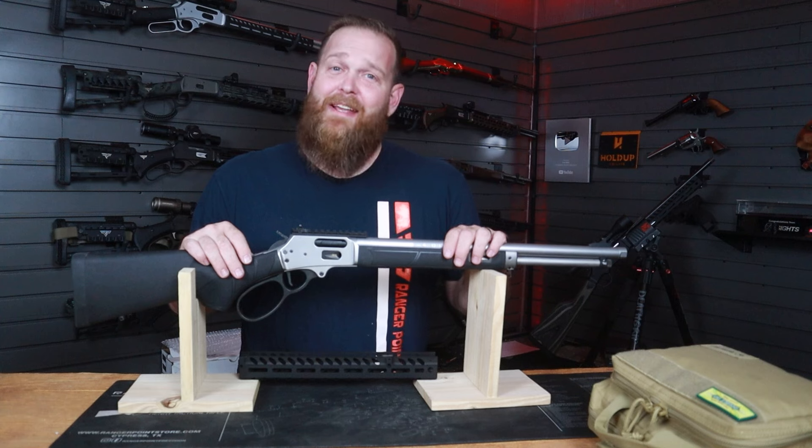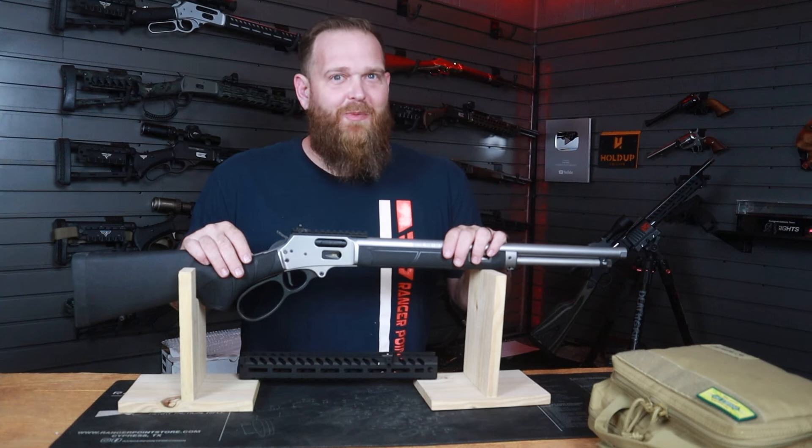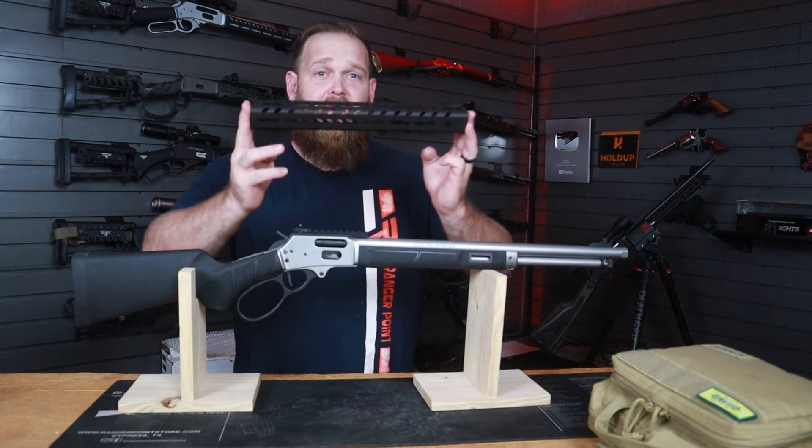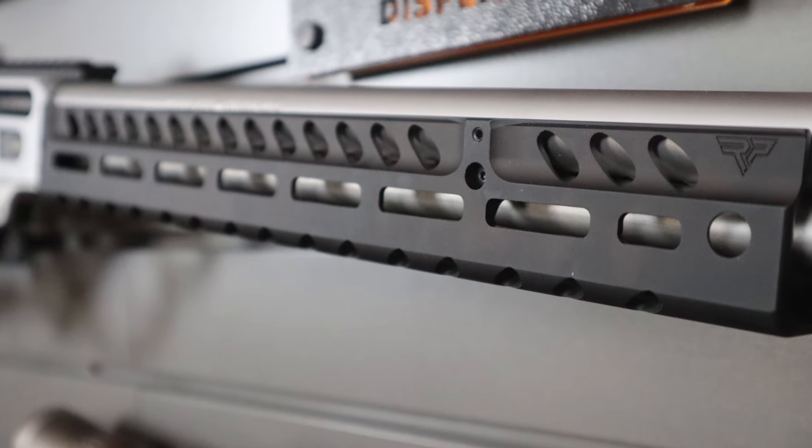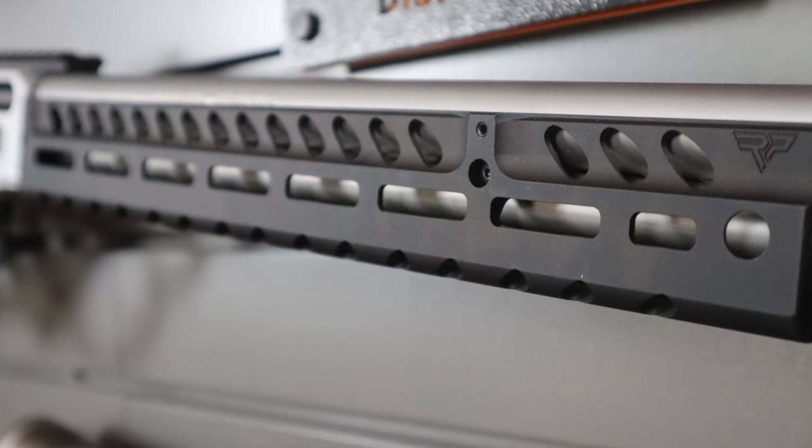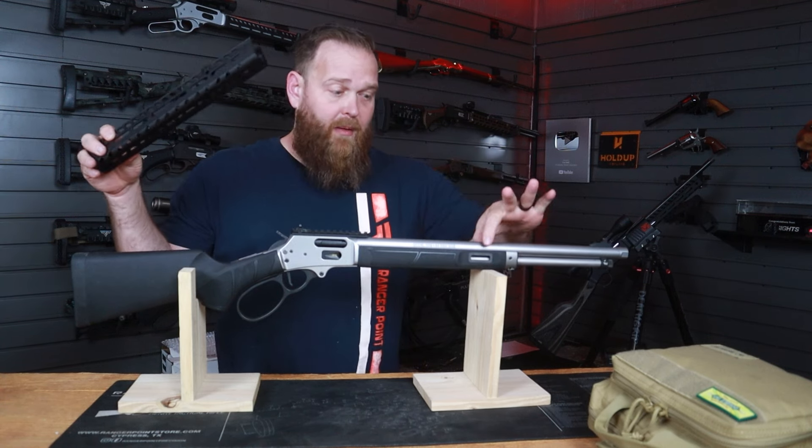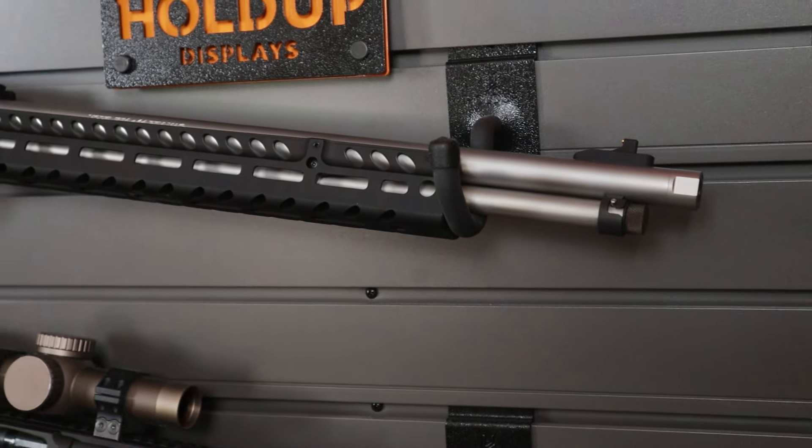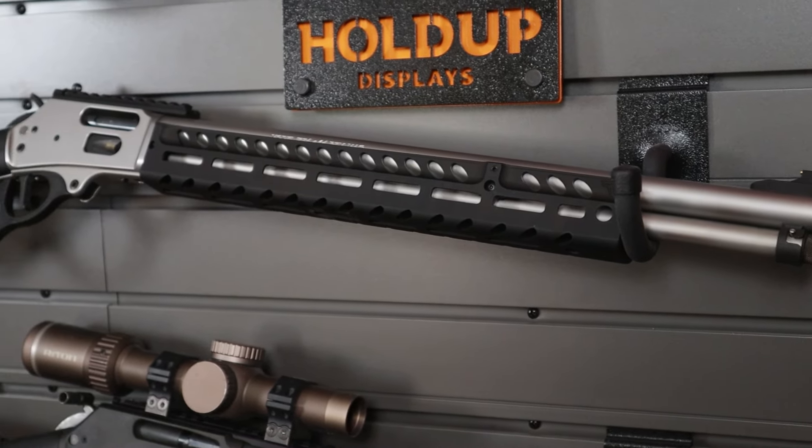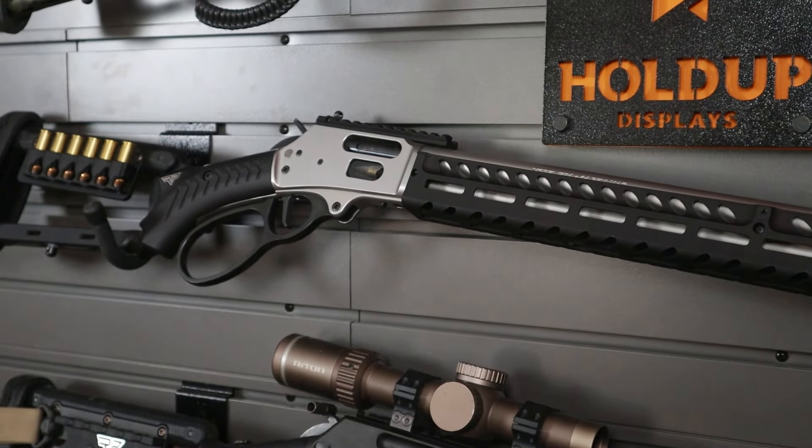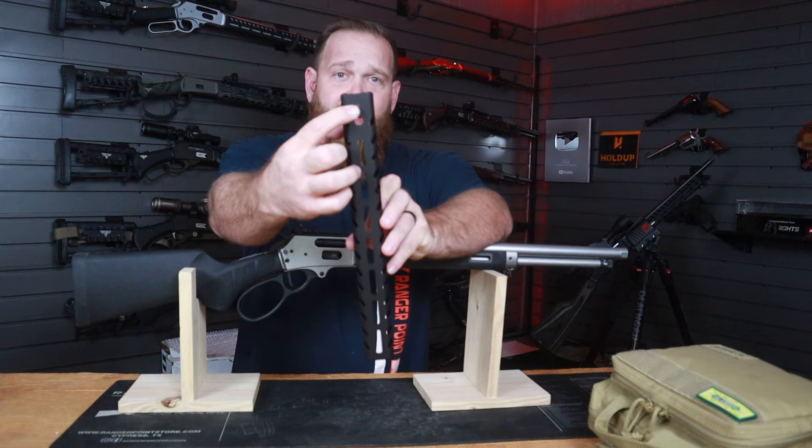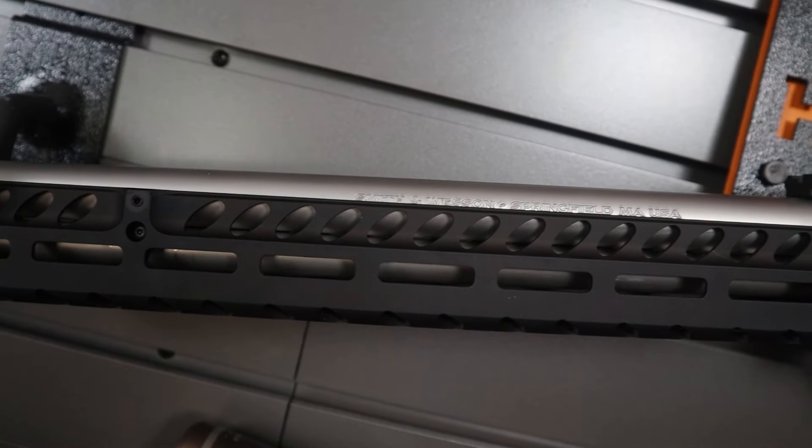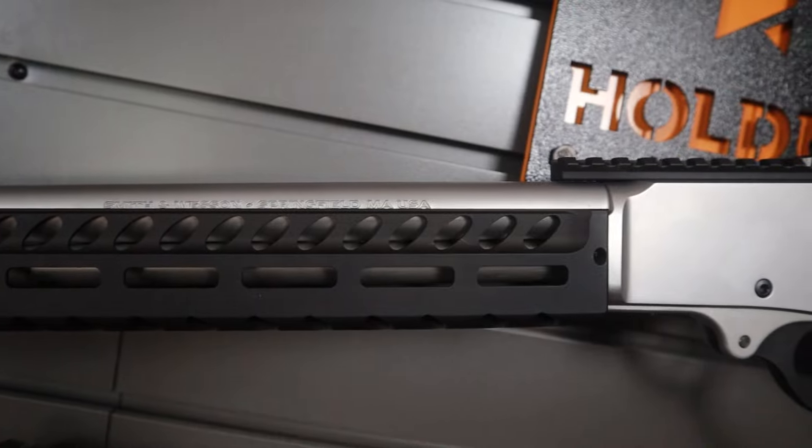Hello Ranger Point Precision friends and family, and a special howdy to all you space cowboys. Today we're installing our M-LOK handguard on the Smith & Wesson 1854. This M-LOK handguard offers infinitely more M-LOK slots compared to the factory version. We've got slots at three, six, and nine o'clock, QD sockets for quick detach sling, and a 10-32 threaded boss for a swivel stud if you choose to install it. Now let's get started.